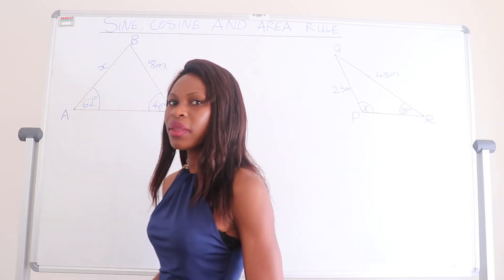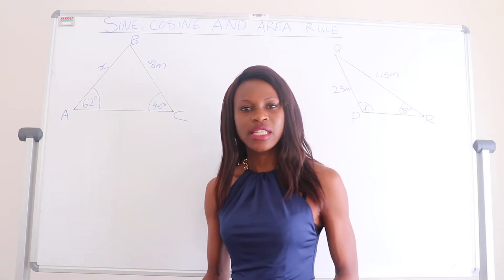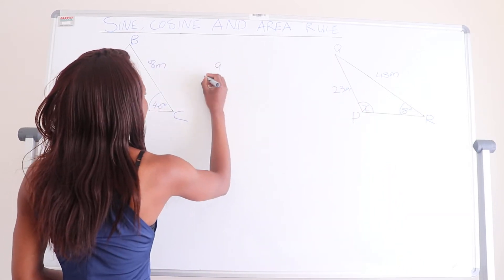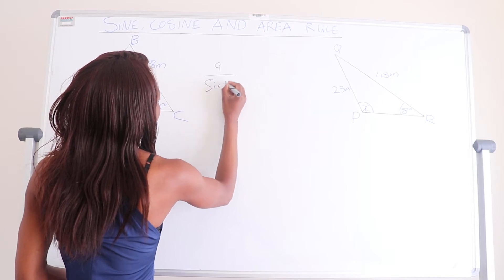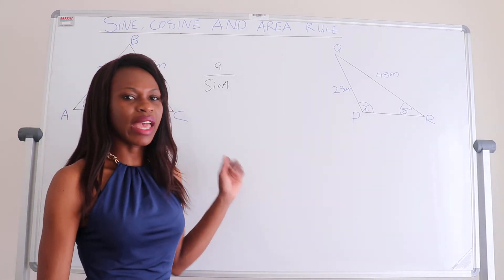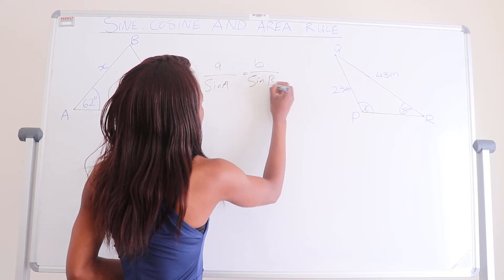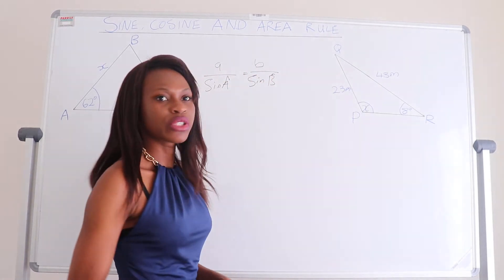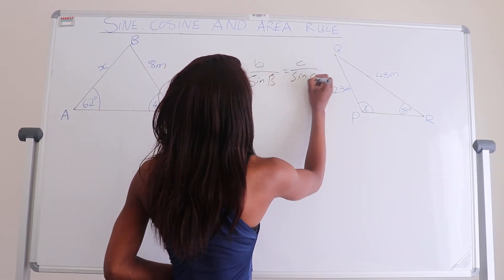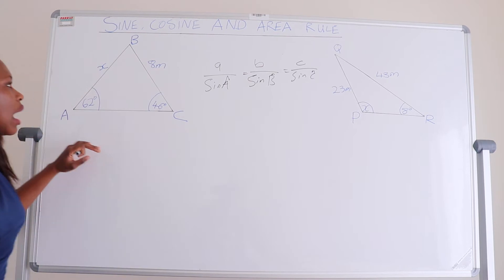Remember the sine rule from lesson 84: the equation of the sine rule is a divided by sine of A — where the small a is the side opposite to angle A — equals b divided by sine of B, where angle B is opposite to side b, and then c divided by sine of angle C, where they are opposite to each other.